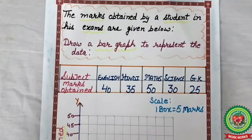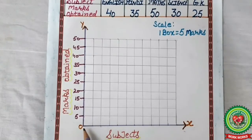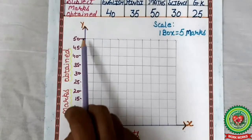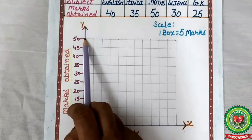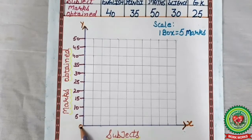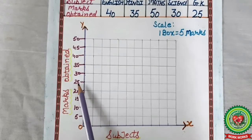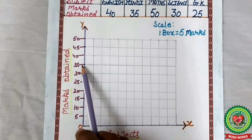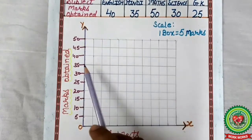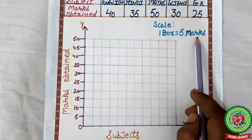Now we will draw a bar graph. First of all, we will draw two lines. The horizontal line is known as X-axis and the vertical line is known as Y-axis. We will write the table of 5. Start from 0: 0, 5, 10, 15, 20, 25, 30, 35, 40, 45, and 50. We have written the table of 5 because the scale was 5 marks.